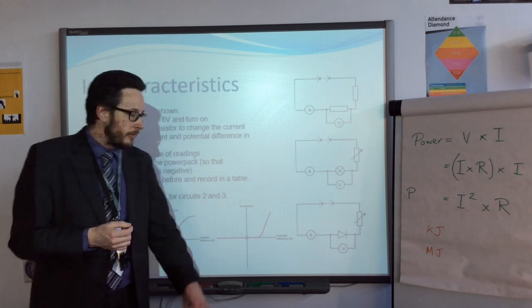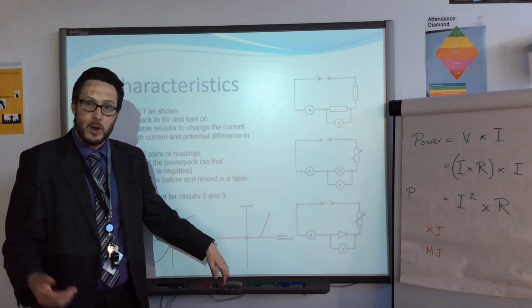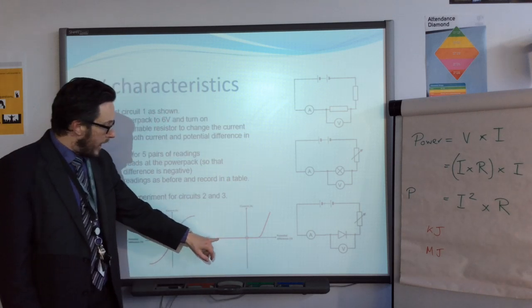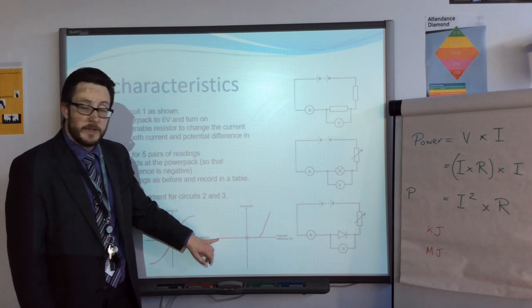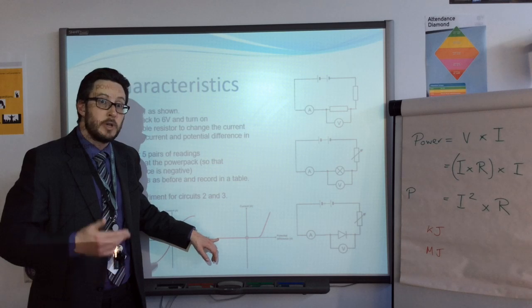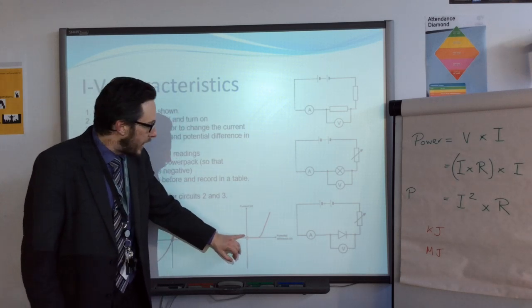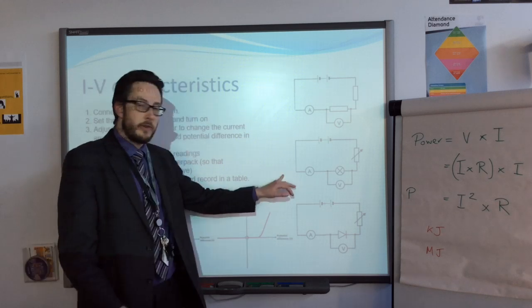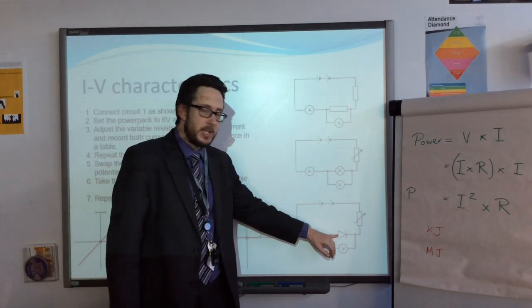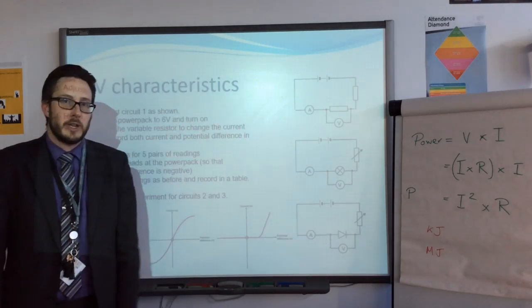This is the graph for a diode. The reason is because diodes only allow electricity to flow in one direction through it. When they're negative, when the potential difference is negative, then no current can flow. It will not flow through the diode in the incorrect direction. But once it goes to the positive, it doesn't increase initially, and then all of a sudden it shoots up as it allows the current to flow through. If that was a light-emitting diode, or an LED, that would give out light when the current increased at that point.